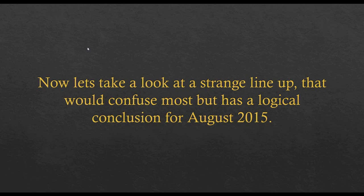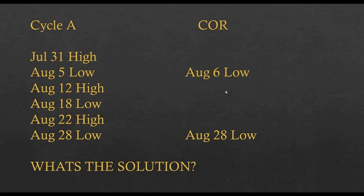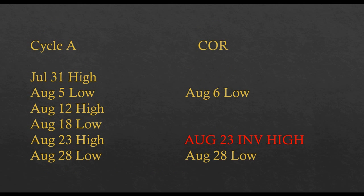Now let's look at a strange lineup from August 2015 in the EUR/USD. Here's cycle A: high, low, high, low, high, low. Here's the COR: low, low — because the COR only pivots twice in August, on August 6th and August 28th, and both are lows. But the rule says you have to go high, low, high, low — so there's a conflict. The solution: I checked my inversion zone and placed an inversion on August 23rd, making it a high. Now we go low, high, low.